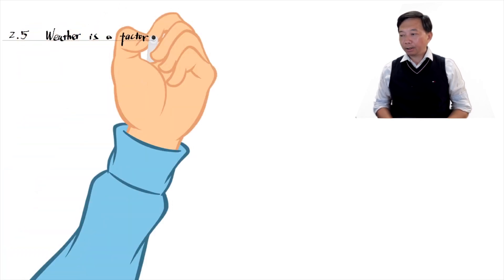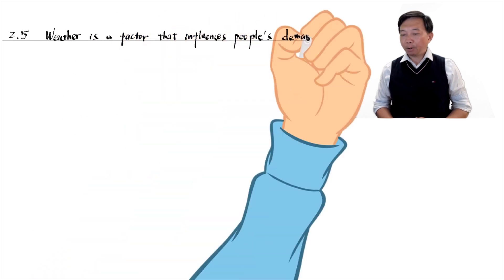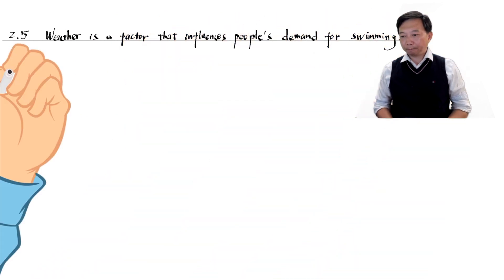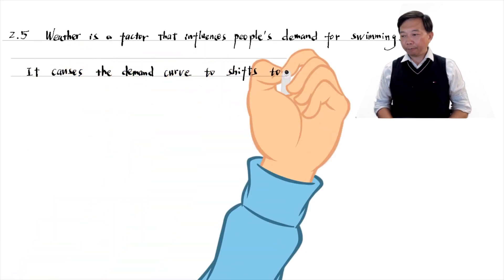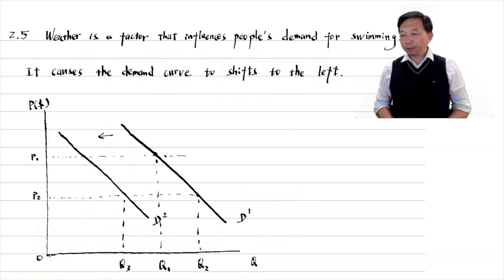In this exercise, weather is a factor that influences people's demand for swimming. It causes the demand curve to shift to the left. For any given price of swimming, the quantity of swimming demanded reduces because of the cold weather.